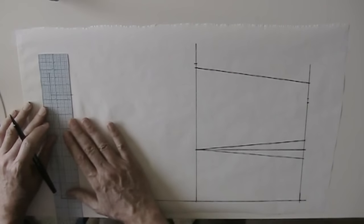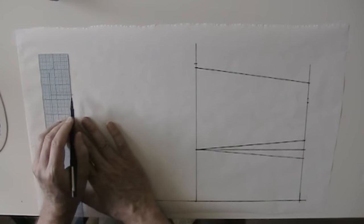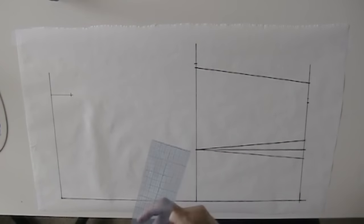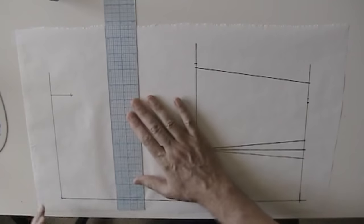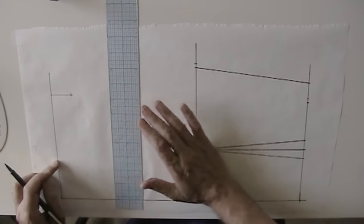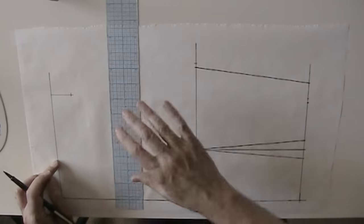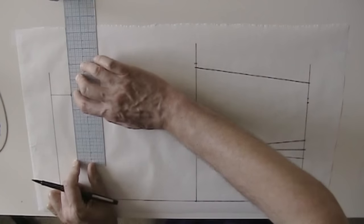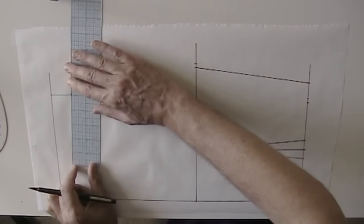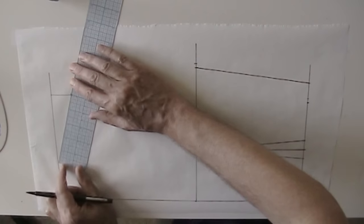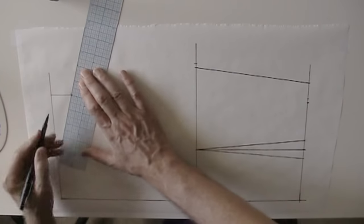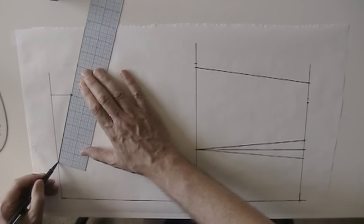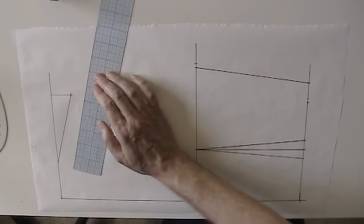Now I need to refer to our measurements for my shoulder slope, which should be one and three-eighths inches. So I'll measure down one and three-eighths inches and make a mark. Now my shoulder seam length, according to my measurements, should be five inches. So I'm going to place my ruler so that this five-inch point on the ruler is at this mark. And I'm going to rotate the ruler until it meets the shoulder line. And draw a line between the two points. And there's my shoulder.